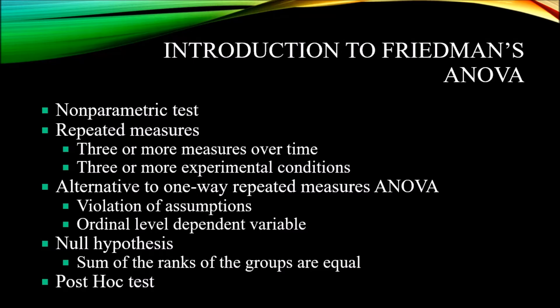One circumstance is where we have violated the assumptions for a univariate ANOVA — where the data violate the assumptions of normality or homogeneity of variances, and we can no longer use univariate ANOVA. The other instance is where the ordinal level of measurement is used for the dependent variable. Univariate ANOVA can only be used with interval or ratio level of measurement, not ordinal. Friedman's ANOVA will accept the ordinal level of measurement.